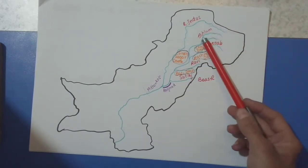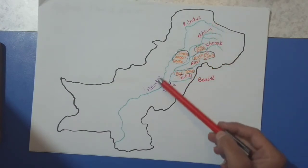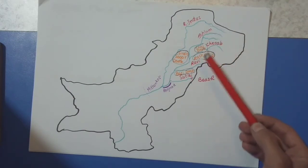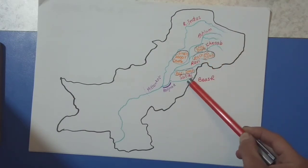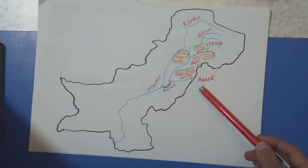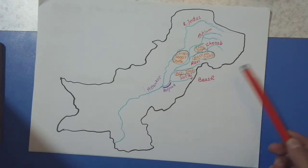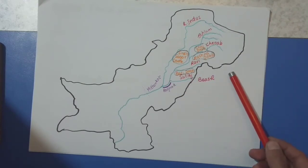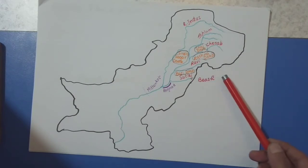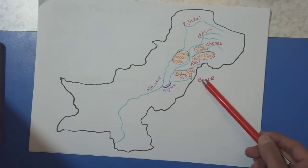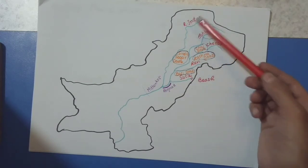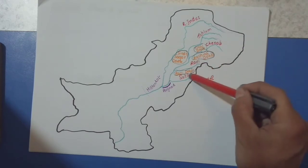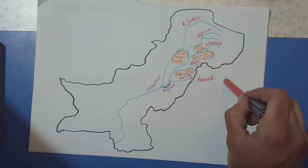First we need to memorize their names. This is the main river, River Indus. What is joining River Indus is Jehlam, Chenab, Ravi, and Satlaj. Satlaj is joined by another river called Biaz. The Biaz river actually flows in India, and part of Satlaj is also in India — that part of Satlaj flowing in India is joined by Biaz. So there are five main tributaries of River Indus: Jehlam 1, Chenab 2, Ravi 3, Satlaj 4, Biaz 5.